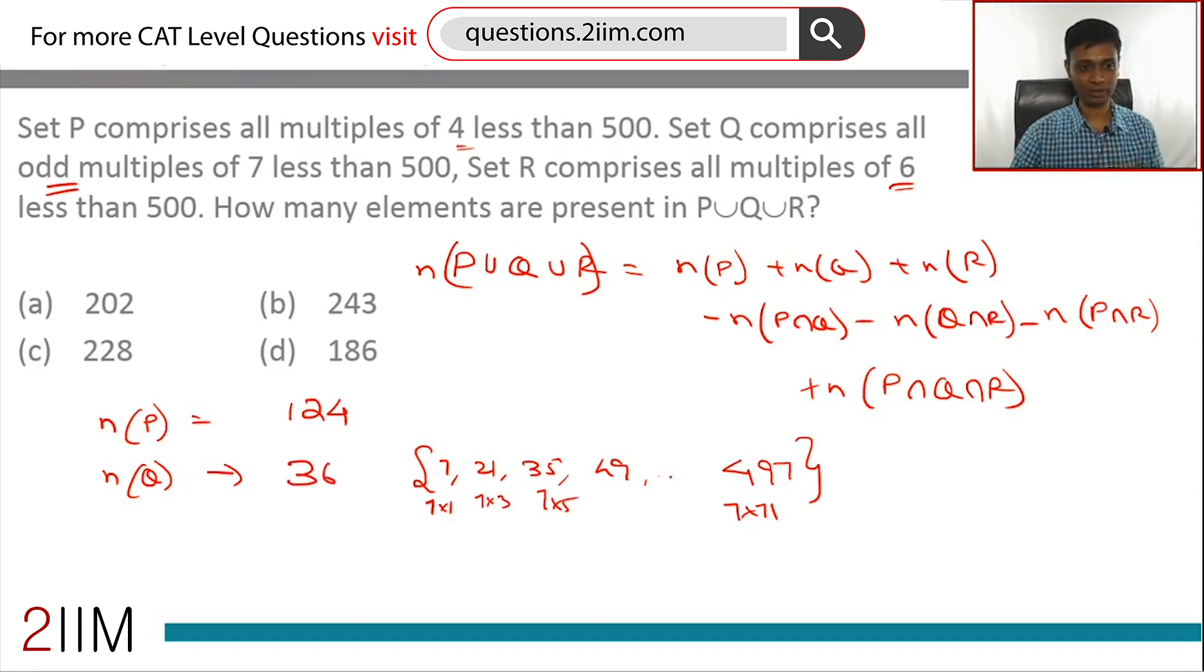Set R comprises all multiples of 6 less than 500. 500 by 6: 480 is 80 into 6, so 498 is 83 into 6. In set R there are 83 elements.